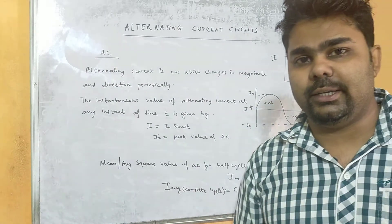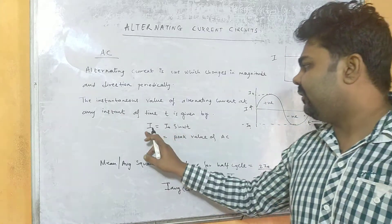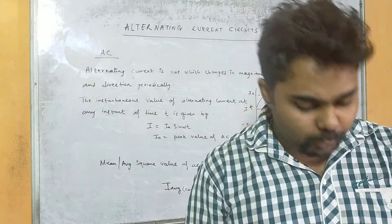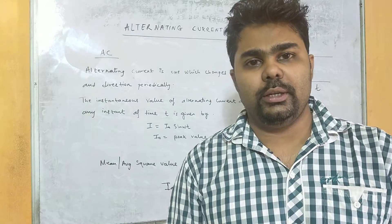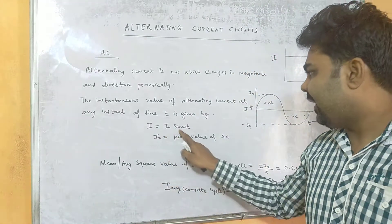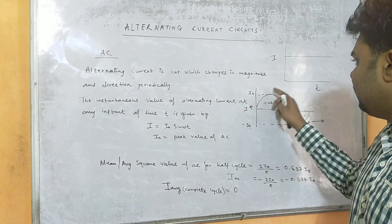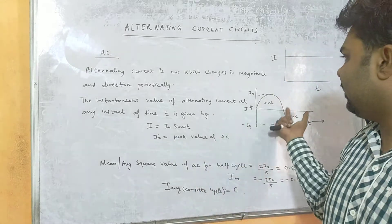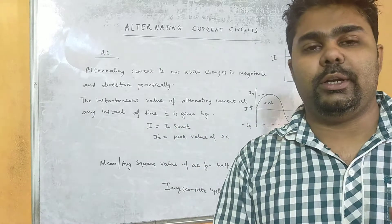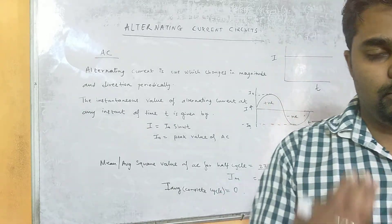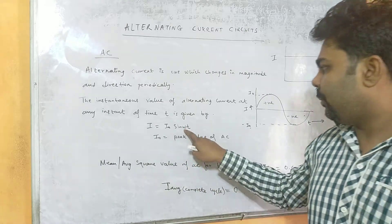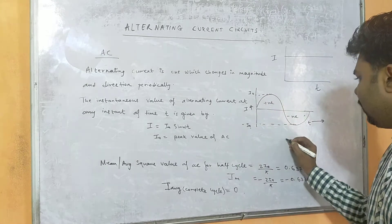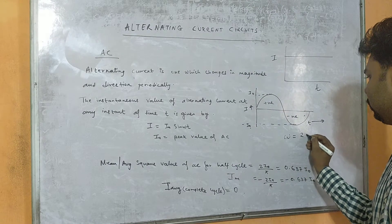The instantaneous value of alternating current is denoted by I equals to I₀ sin(ωt). I₀ here is the peak value of alternating current. Since the current is moving as a sinusoidal wave, it is denoted in terms of sine — it can be denoted in terms of cosine also if it follows a cosine wave. What is ω here? ω is the angular frequency or angular velocity, given by ω equals to 2π divided by T.